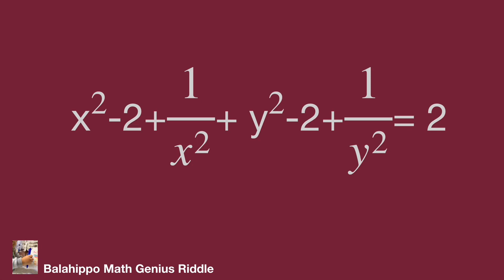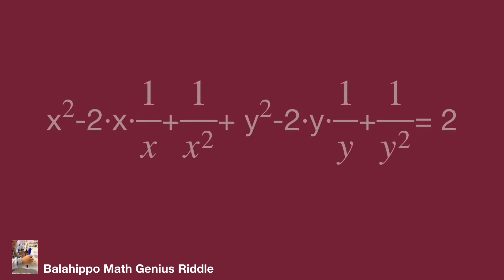The first item group can be adjusted as x squared minus 2 times x times 1 over x plus 1 over x squared, which becomes 2. Let's adjust the second group with the same pattern. It becomes 2.